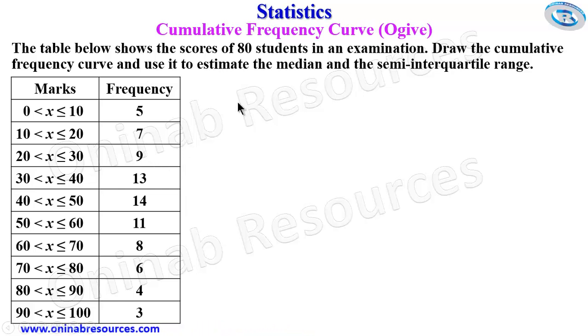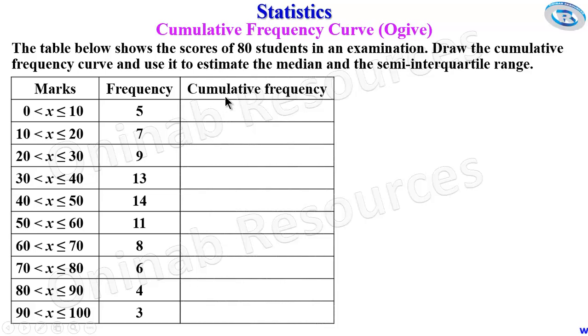So what we do now to enable us to draw the cumulative frequency curve is to create another column for cumulative frequency. The cumulative frequency for the first class interval here is 5, and that of the second class interval is 5 plus 7, giving us 12. The third one will be 12 plus 9, giving 21.